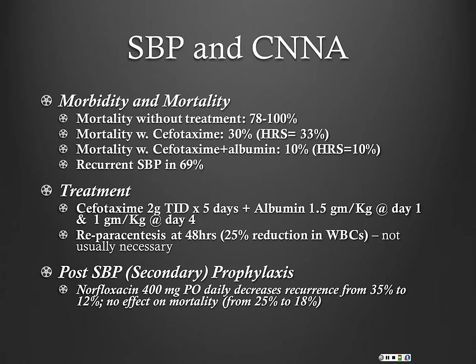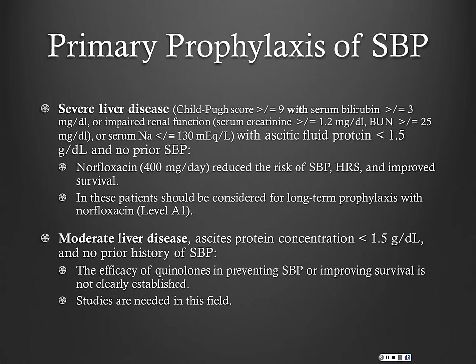For secondary SBP prophylaxis, norfloxacin was the studied medication. Ciprofloxacin at 500 mg daily is probably the best alternative. The guidelines allow for 750 mg weekly, but we've gotten away from that because of the risk of resistance with intermittent dosing — we prefer daily ciprofloxacin.